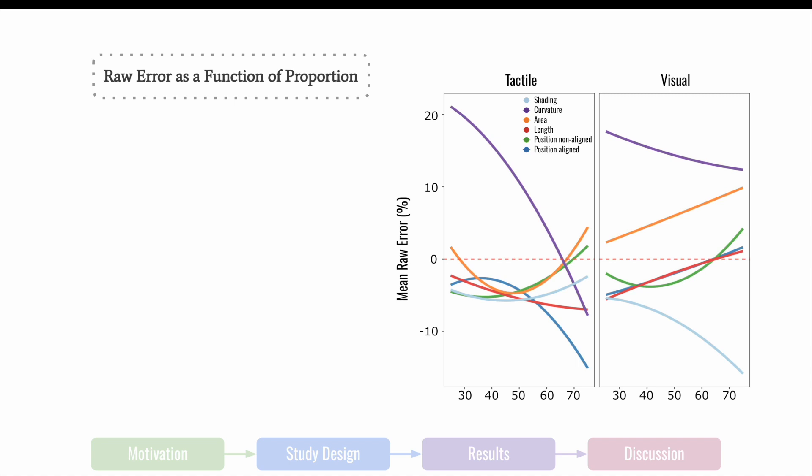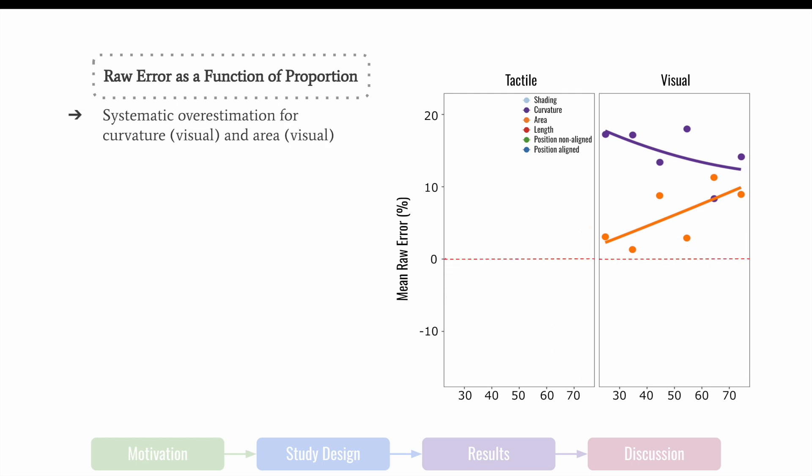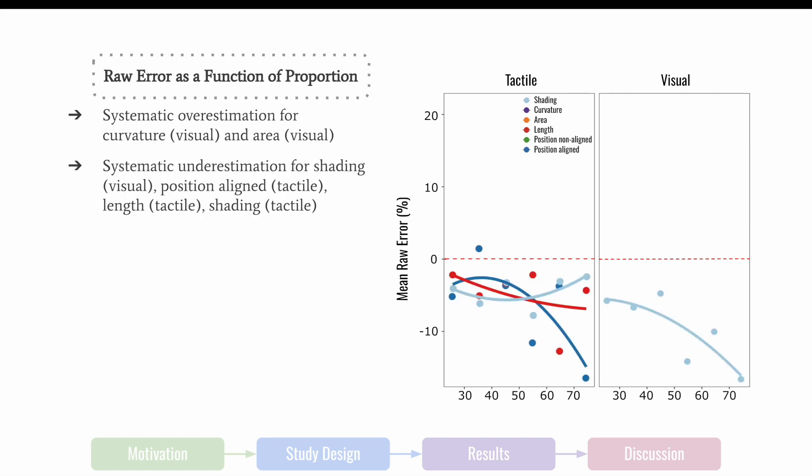On this slide, we show a chart that has raw estimation error for tactile encodings on the left and visual encodings on the right, both as a function of true proportion. We fitted a degree 2 polynomial for each encoding type within tactile and visual conditions separately. Notably, we see that there is a tendency for systematic overestimation for two visual encodings, curvature and area. We also observe a trend of systematic underestimation for shading in the visual condition on the right, and position-aligned length and shading in tactile condition on the left. This begs the question, how should design guidelines account for the tendency to over or underestimate certain encoding types?